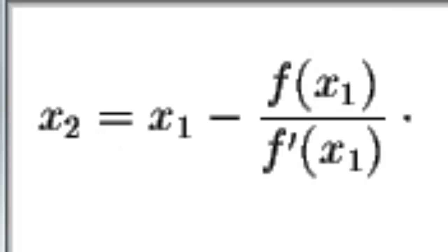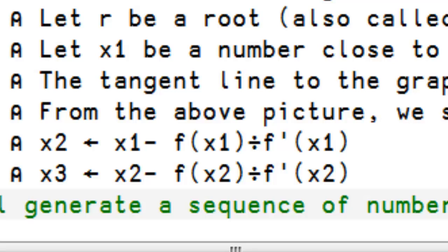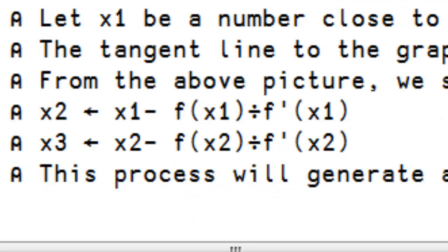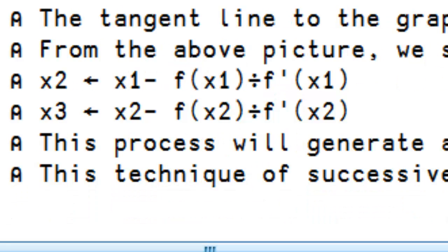And then we compute the third point, which is the same thing. From the second point, we subtract the value of f at that point, divided by the tangent, or the derivative at that point. And so on and so on. So this will generate a series of numbers that will get closer and closer to the real value. This technique is called the Newton-Raphson method.